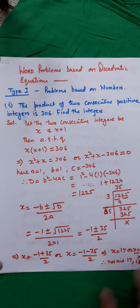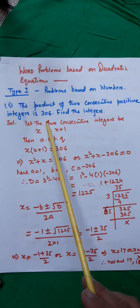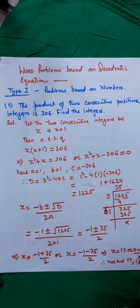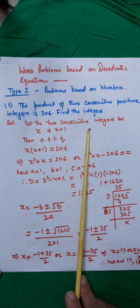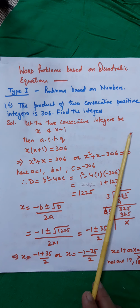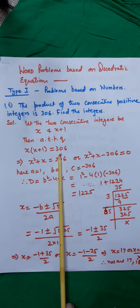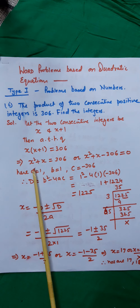Type 1: Problems based on numbers. The product of two consecutive positive integers is 306 — find the integers. Let the two consecutive integers be x and x+1, because the gap between two consecutive integers is 1. So we can always assume them to be x and x+1. You can also have x−1 and x. According to the question, their product has to be 306. On solving, I get a quadratic equation.